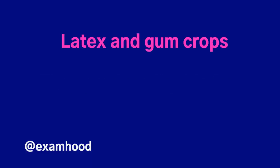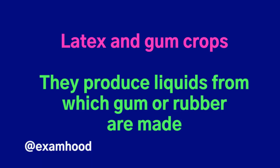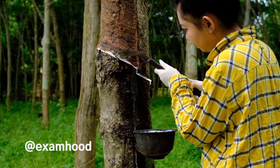Latex and gum crops — they produce liquids from which gum or rubber are made. Example: rubber.